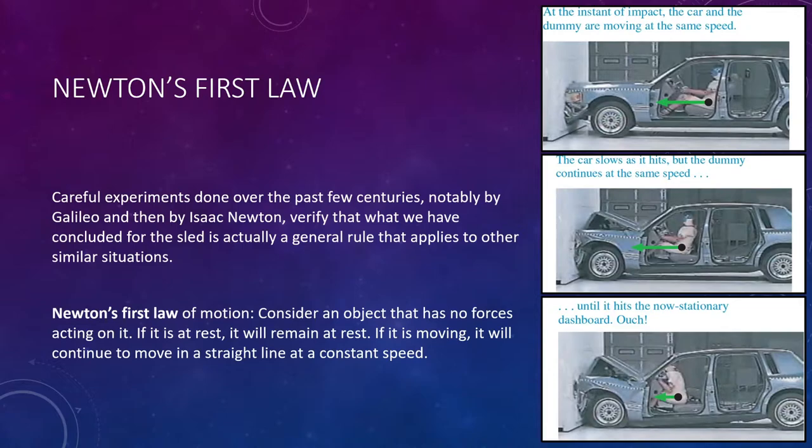Newton's first law of motion states the following. Consider an object that has no forces acting on it. If this object is at rest, it's going to remain at rest. Now, that's pretty straightforward. If there's just an object sitting there on your table, it's not going to move unless something acts to move it. However, if the object is moving and there's no forces acting on it, then it will continue to move in a straight line and at a constant speed. There's nothing acting on it to push it or pull it or slow it down, make it pick up speed, anything like that. It just moves in a straight line at a constant speed. This is the premise of Newton's first law.